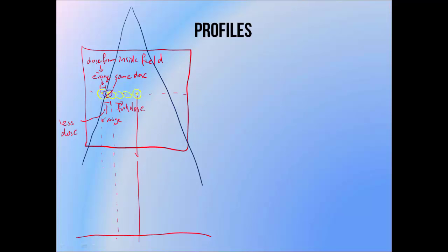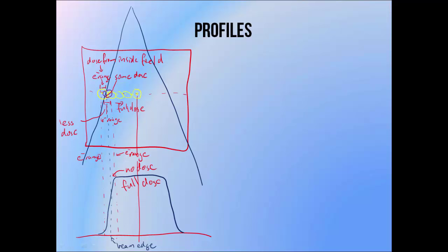This loss of lateral electronic equilibrium at the beam edge is largely responsible for the shape of the beam penumbra. If we draw a profile with the beam edge marked in blue and the lateral electron range either side marked in red, we see that the dose starts to increase at around about one electron range from the beam edge, but it doesn't stop increasing until one electron range inside the beam edge. The middle region is roughly flat since it's in lateral electronic equilibrium and receives full dose. The region within one electron range inside the beam receives a lower dose because it's not receiving any dose from outside of the beam, and dose in the region just outside the beam is largely due to electrons generated inside the beam that are able to reach those points.